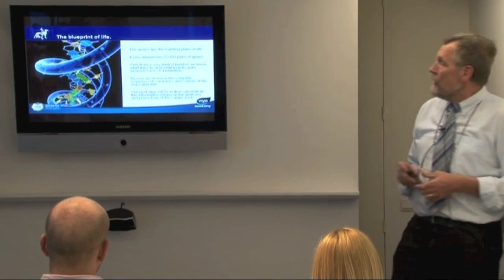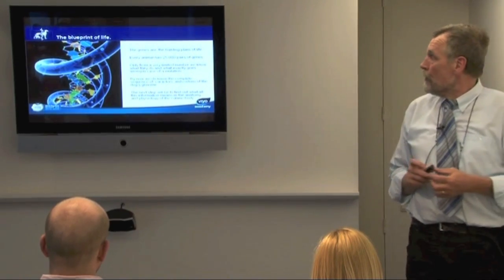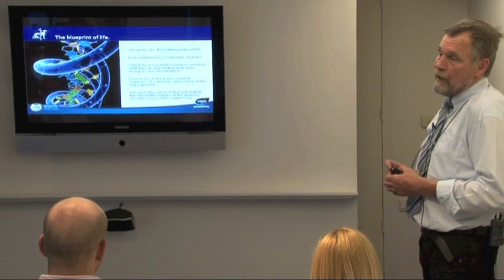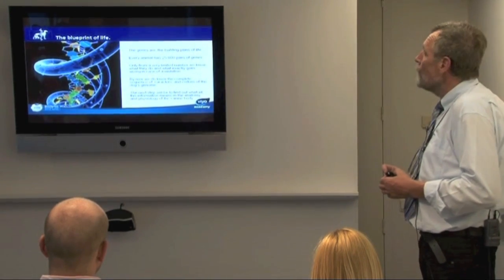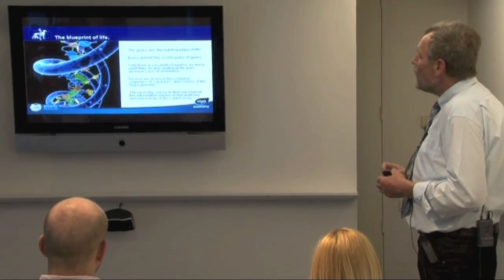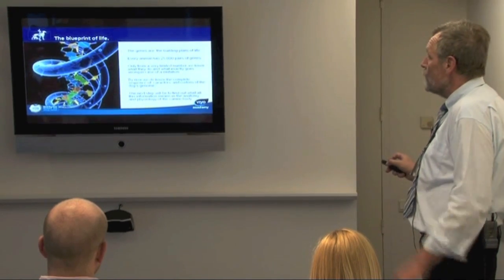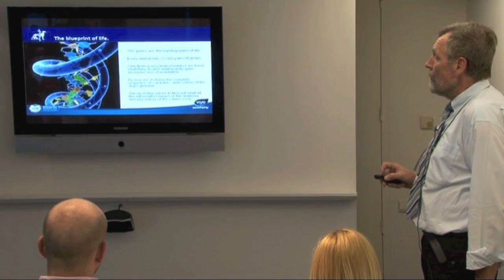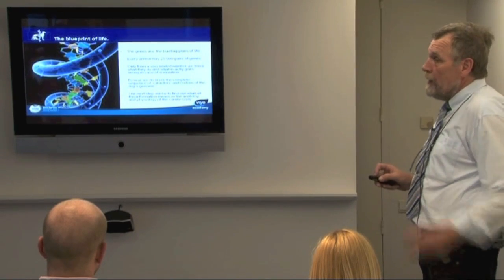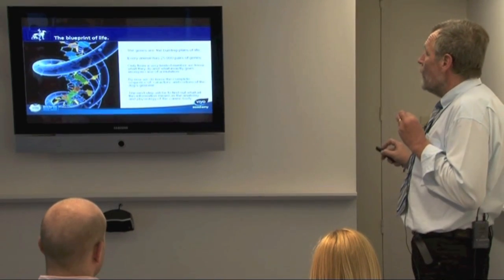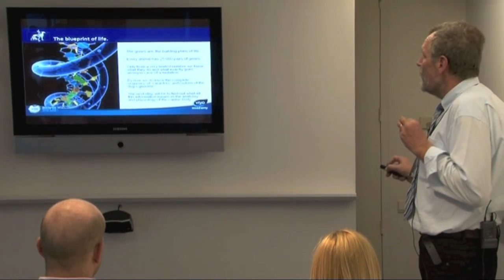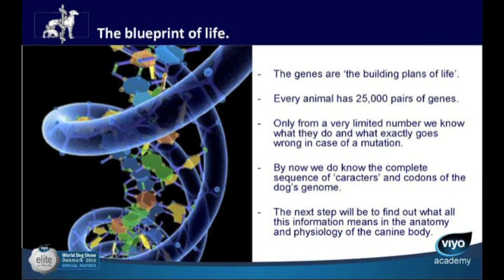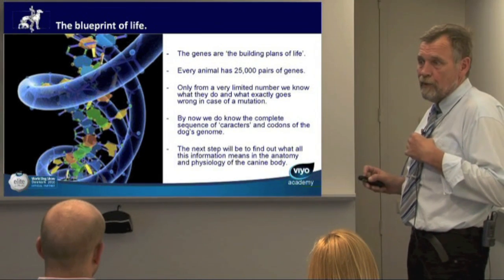Genes, as I told you, are the building plans of life. Every animal has 25,000 pairs of genes. And then you should realize that only from a very limited number do we know what they do and what exactly goes wrong in a mutation.